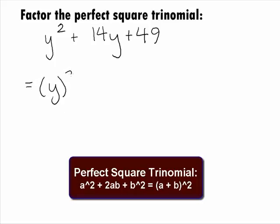Rewriting our trinomial in this form, we get the first base of y being squared plus 2 times that first base of y times the second base of 7 plus the second base of 7 being squared.